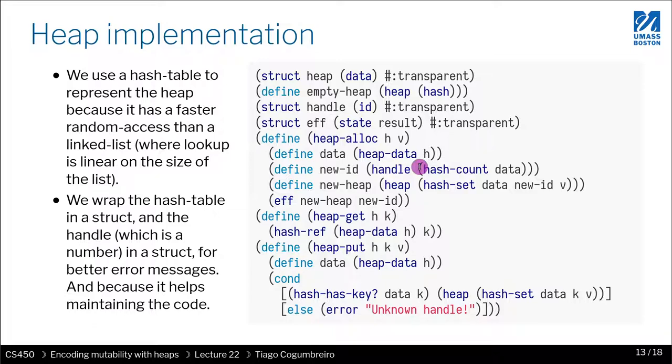So you can think that the first element is going to have an ID of 0. The second value being allocated is going to have an ID of 1. The third is going to be an ID of 2, and so on.